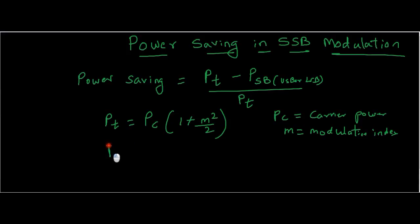The power in one sideband, USB or LSB, can be expressed as PC·m²/4. So if we substitute these values in equation 1, we will get the power saving in SSB modulation. We will substitute these values and see what is the final equation.